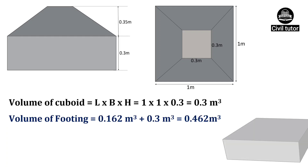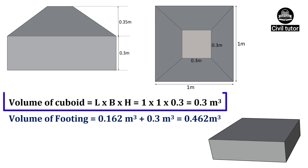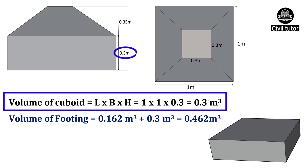Now we need to calculate the volume of the cuboid, given by the formula l × b × h, where l is the length of the footing = 1 m, width is also 1 m, and h is the height of the cuboid = 300 mm or 0.3 m. On substituting these values, the volume of the cuboid equals 0.3 m³.